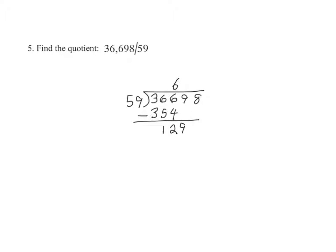And we ask ourselves, how many times does 59 go into 129 at most? And the answer is 2, since 2 times 59 gives us 118.